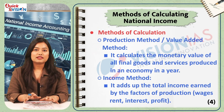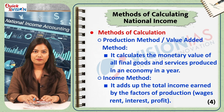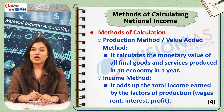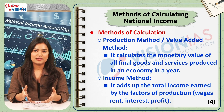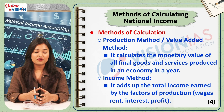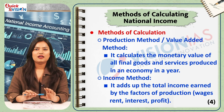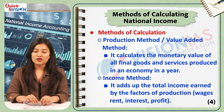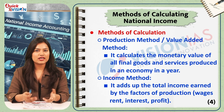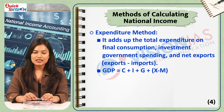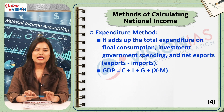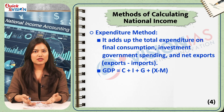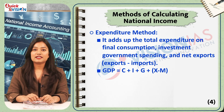There are three main methods for calculating national income, and ideally all three should yield the same result. The first is the production method or value added method — it sums up the value of final output from all sectors of the economy. The second is the income method — it sums up all incomes earned by factors of production such as wages, rent, interest and profit. The third is the expenditure method — it sums up all final expenditure in the economy, such as consumption, investment, government spending and net exports.